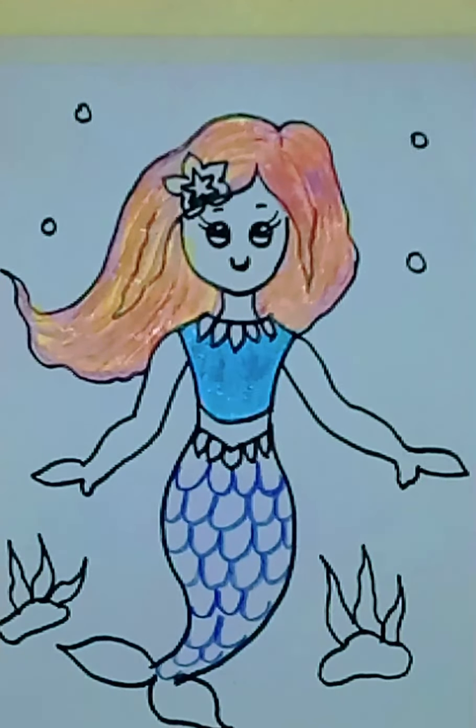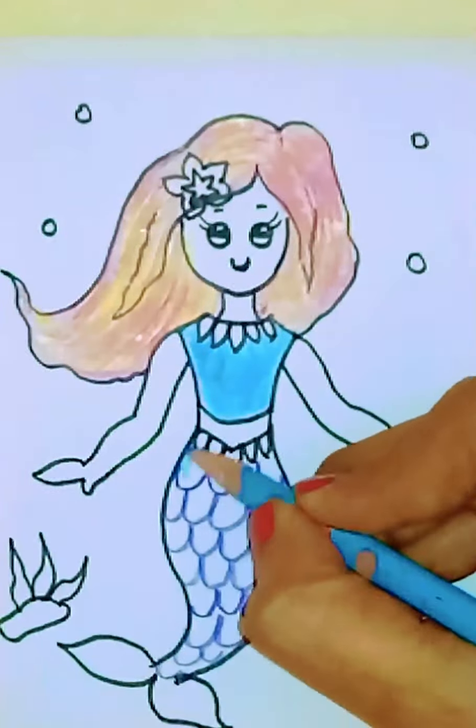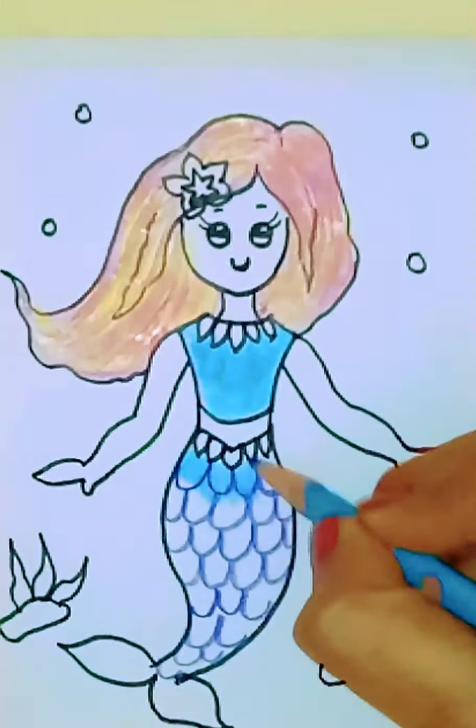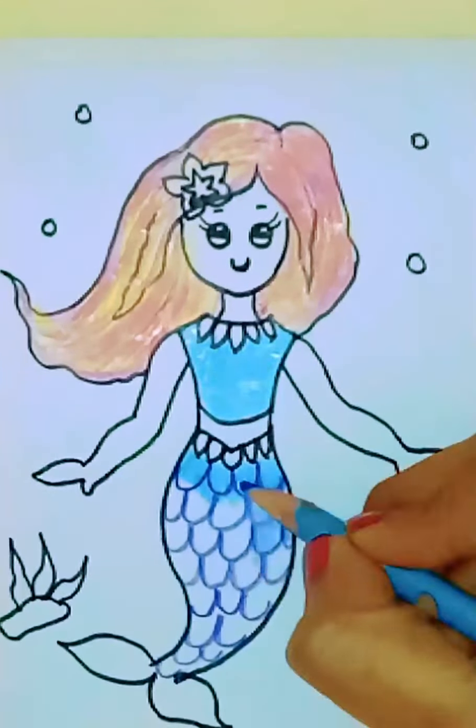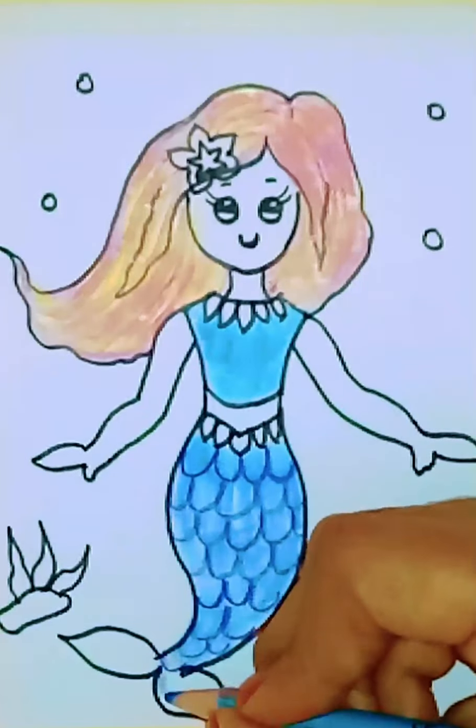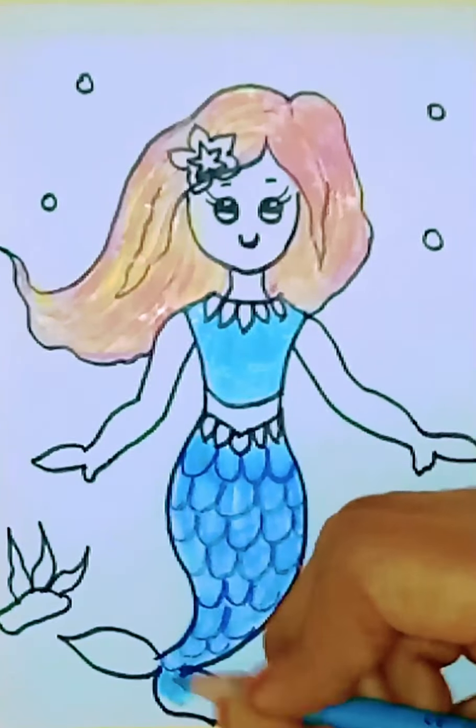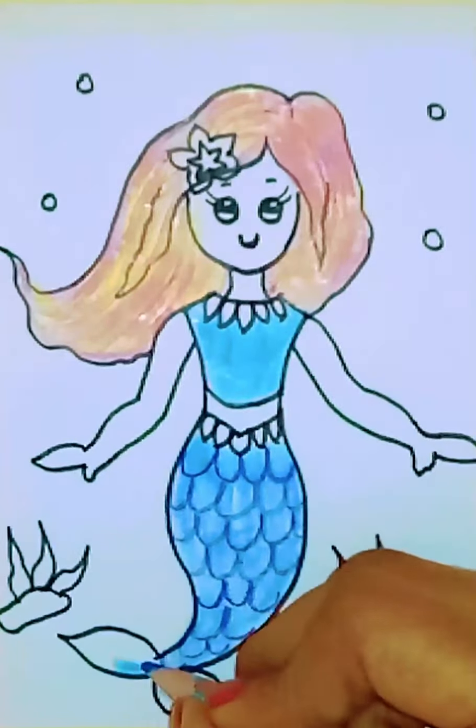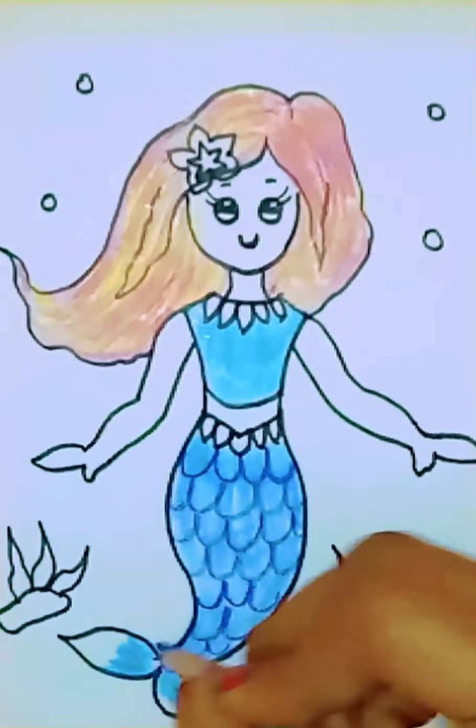Once I have done drawing the scales, I just color it with light blue. Vertical strokes, vertical stroke is from top to bottom. Now I give vertical strokes with light blue and dark blue for her tail.